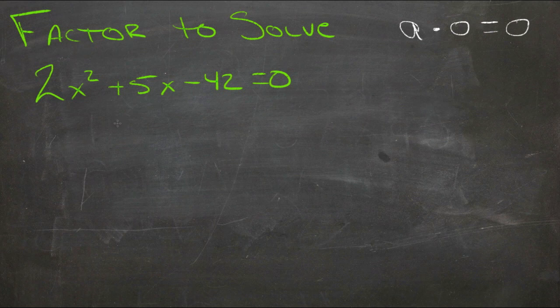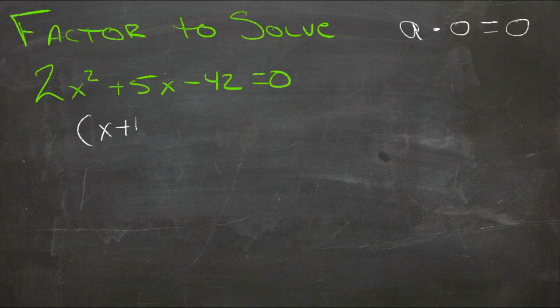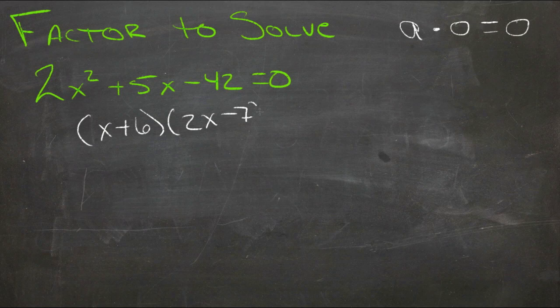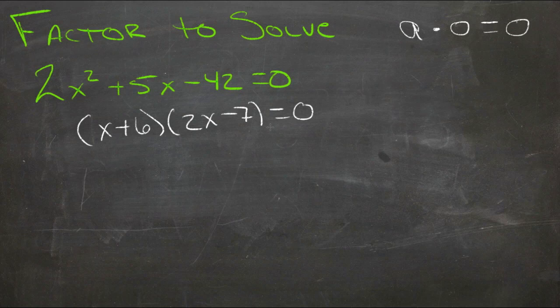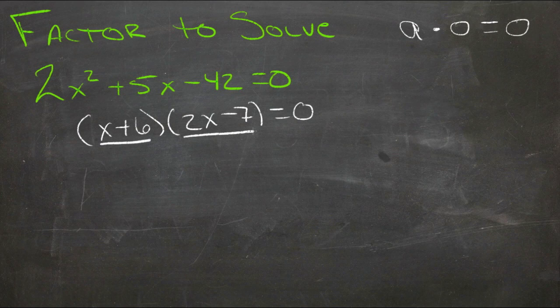So what we need to do is factor it into two binomials, in this case x plus 6 times 2x minus 7. And now since we have two binomials that equal zero, and since anything times zero is zero, we could just make either one of these equal to zero, and then the other one would be equal to zero because of that, and the statement would be true.